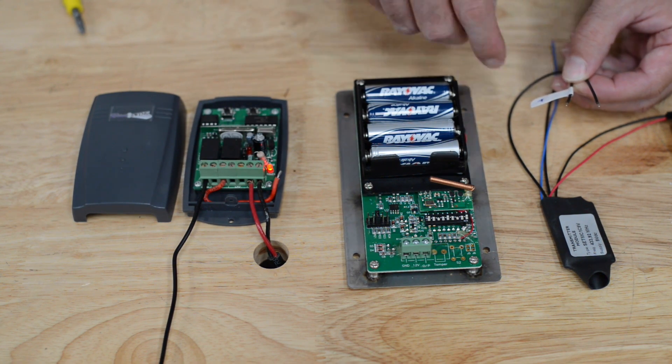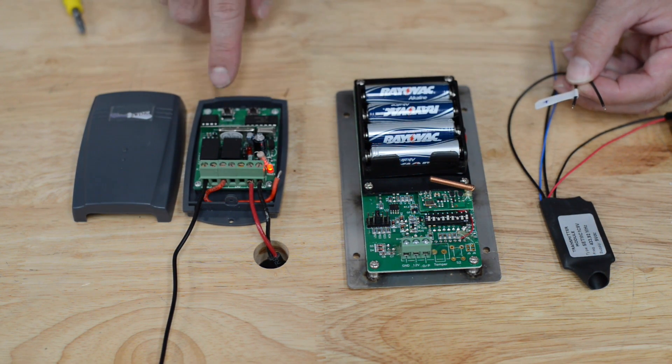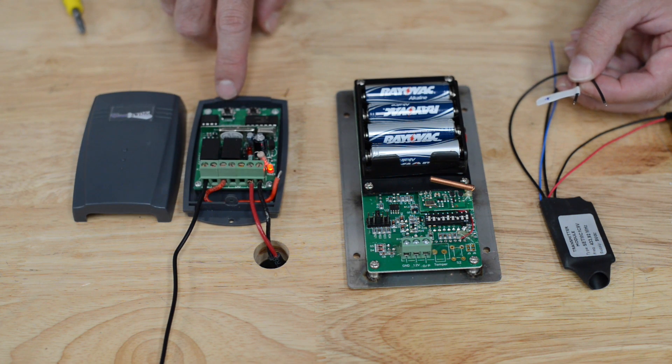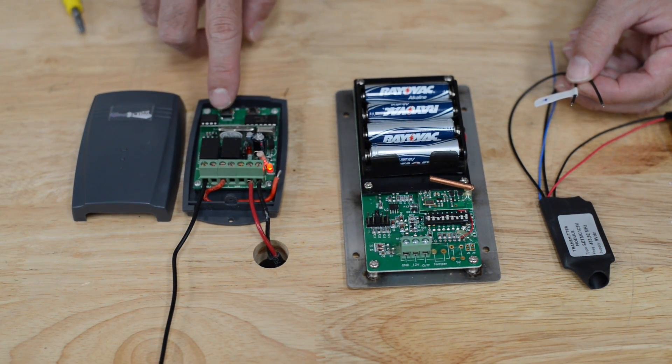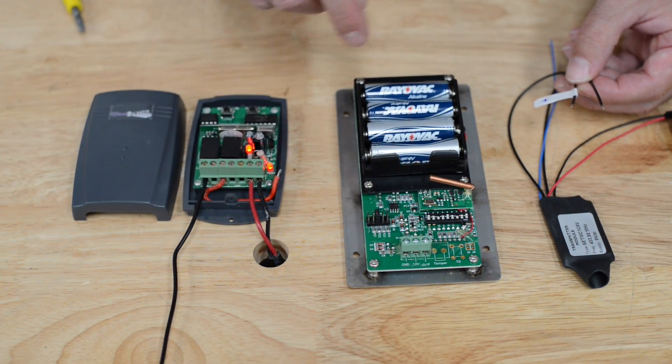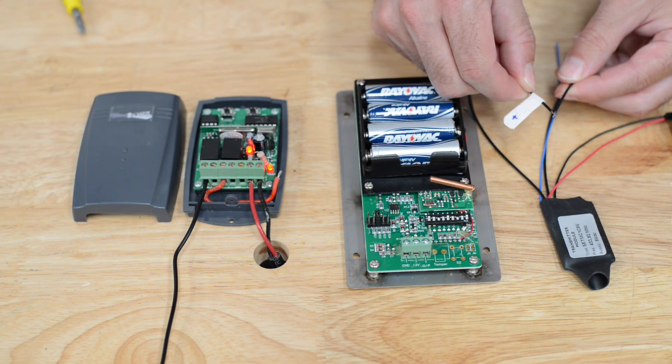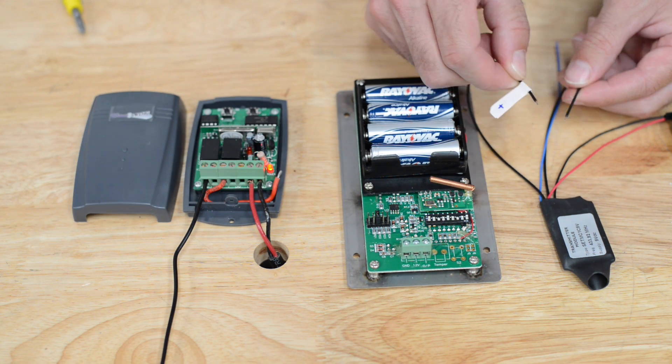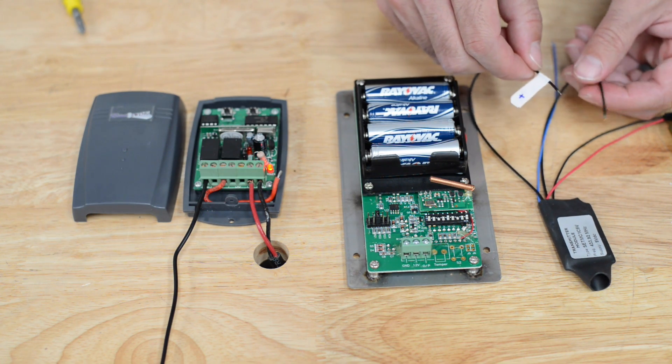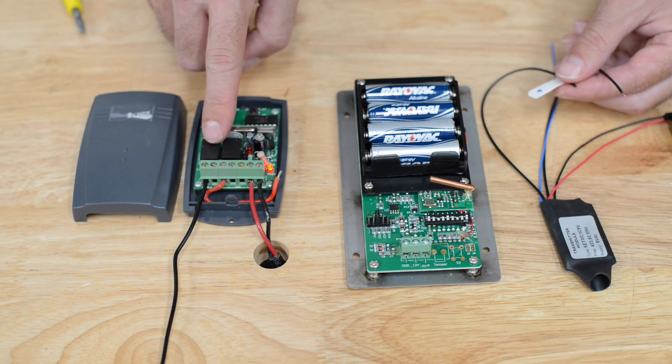With the 9-volt battery already attached to the transmitter module and power already applied to the receiver, press the learn button. The learn light will come on in the center. Take the two black wires and touch the ends together until the light blinks and turns off. Now this transmitter module is learned to the receiver.